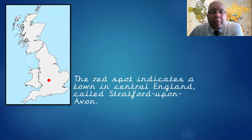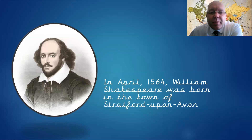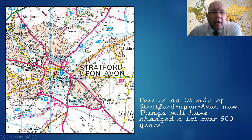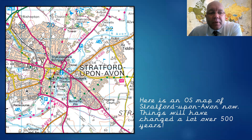We've chosen Stratford-upon-Avon for a very special reason, because in English we are talking about someone who came from Stratford-upon-Avon. In April 1564, William Shakespeare was born in the town of Stratford-upon-Avon. We're not going to be looking at William Shakespeare in this lesson, but we are going to look at his hometown. Here is the OS map of Stratford-upon-Avon — this is the modern map, so you can imagine it's changed a lot since Shakespeare was a lad about 500 years ago.